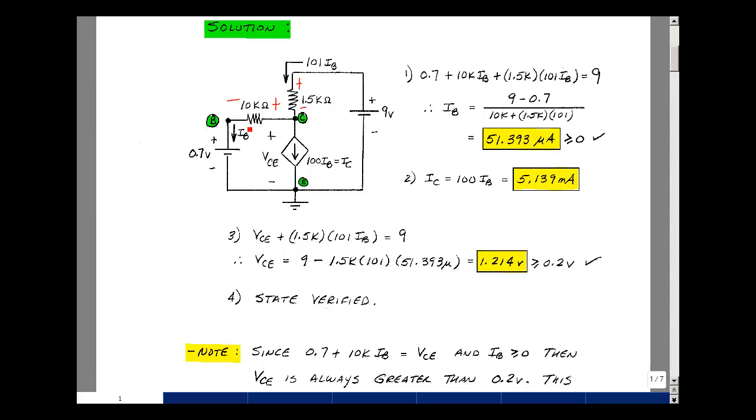If you go around this loop here, the rise in voltage is 0.7. The rise in voltage is 10K times I sub B, and the drop is VCE. To be active, this needs to be greater than or equal to VCE sat, which is equal to 0.2. But here, this side of the equation is at least 0.7. This circuit has the transistor always in the active region.